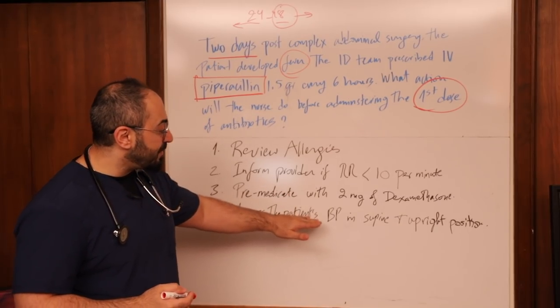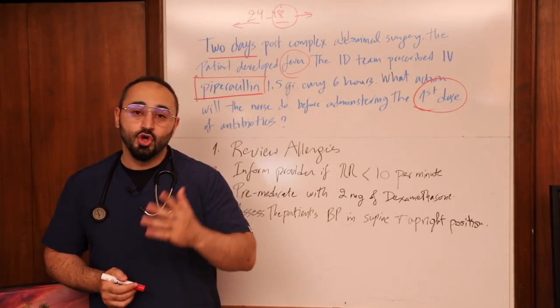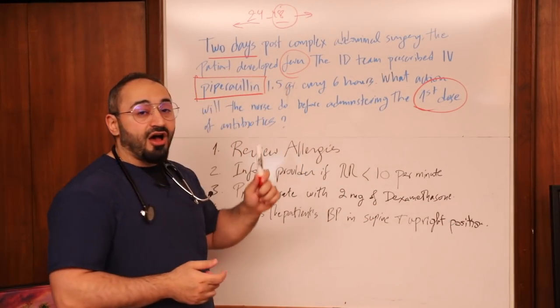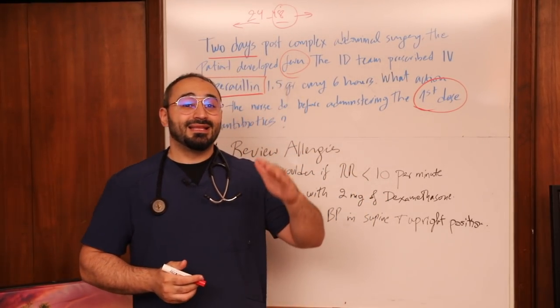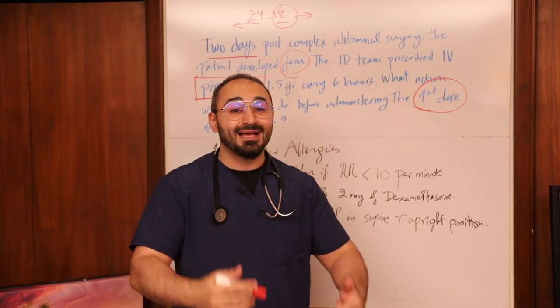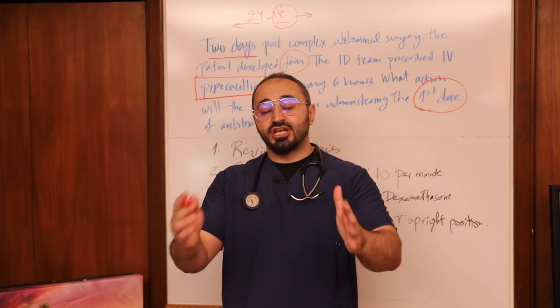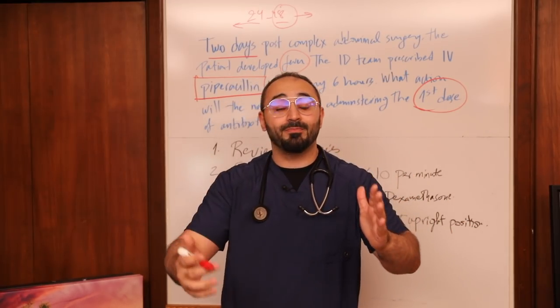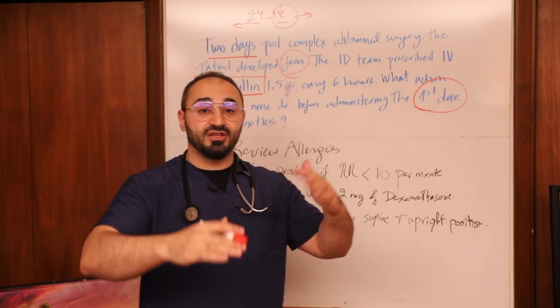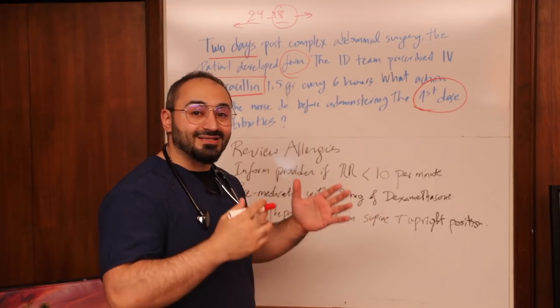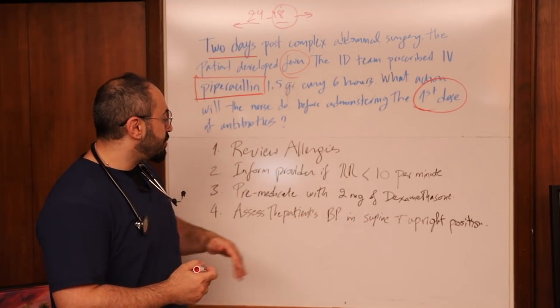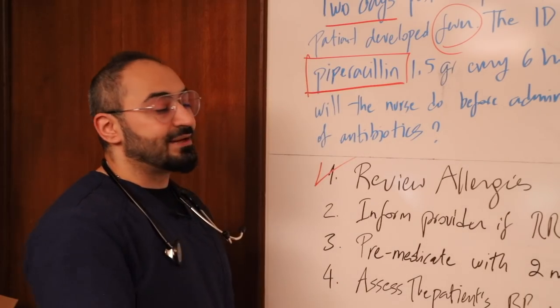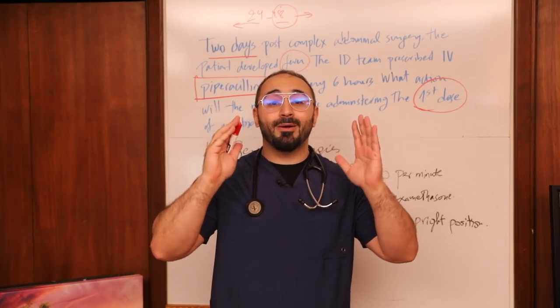Option four: assess the patient's blood pressure in supine and upright positions. Does piperacillin affect blood pressure? It doesn't. If I were giving antihypertensives or digoxin and the patient had signs of orthostatic hypotension, then yes — check supine, then sit them up and recheck after a minute. But here, this is irrelevant. The only relevant answer is option one: review allergies.